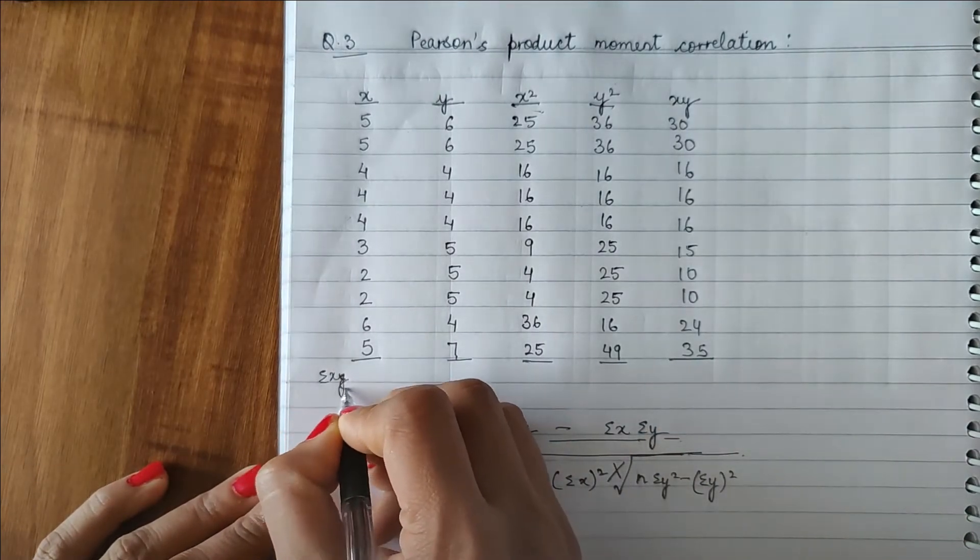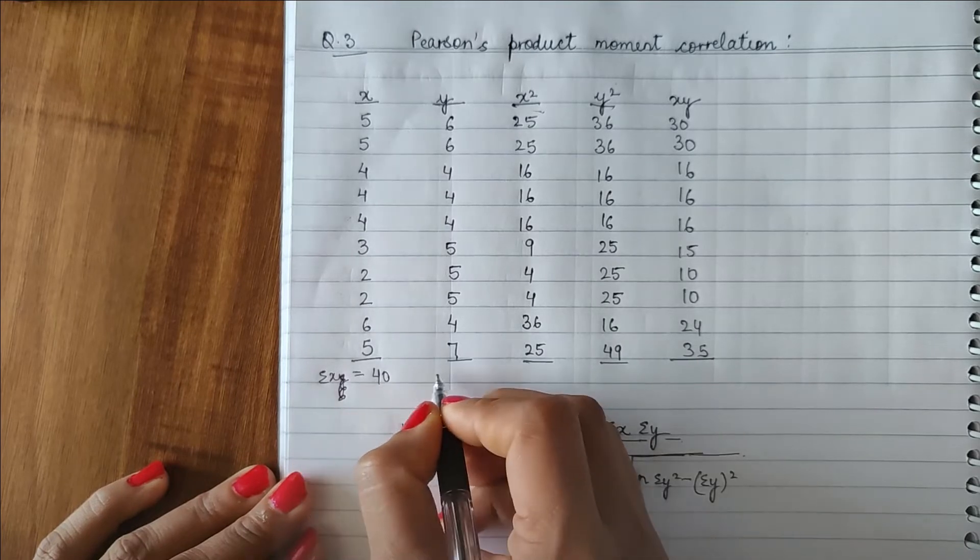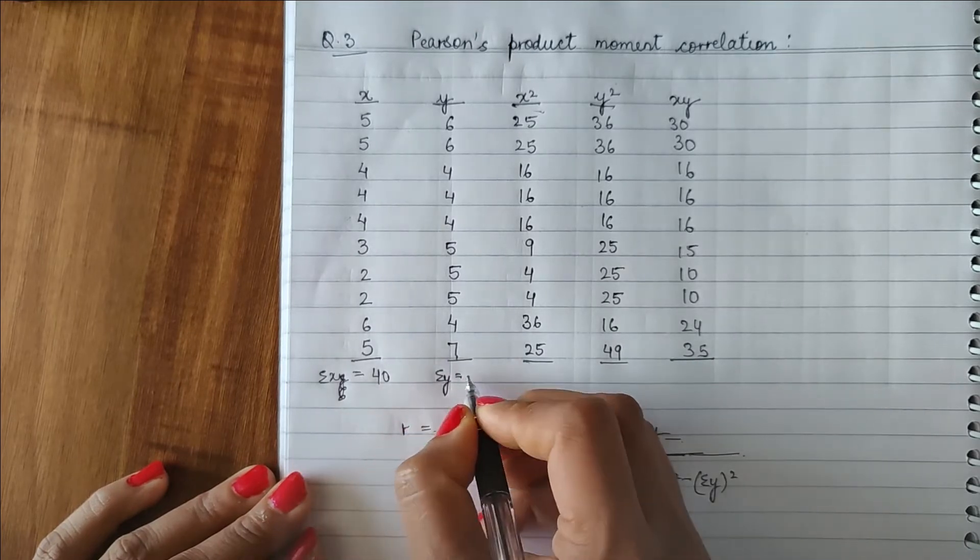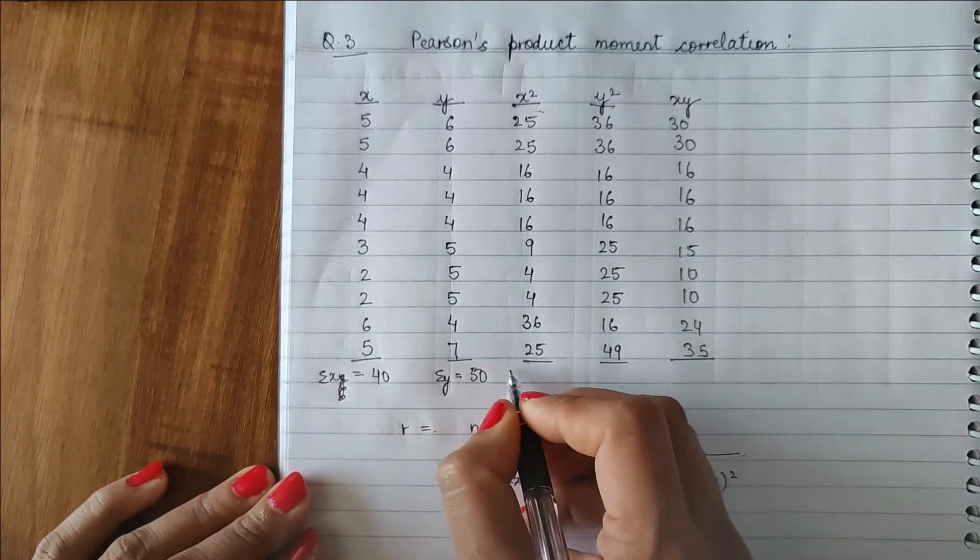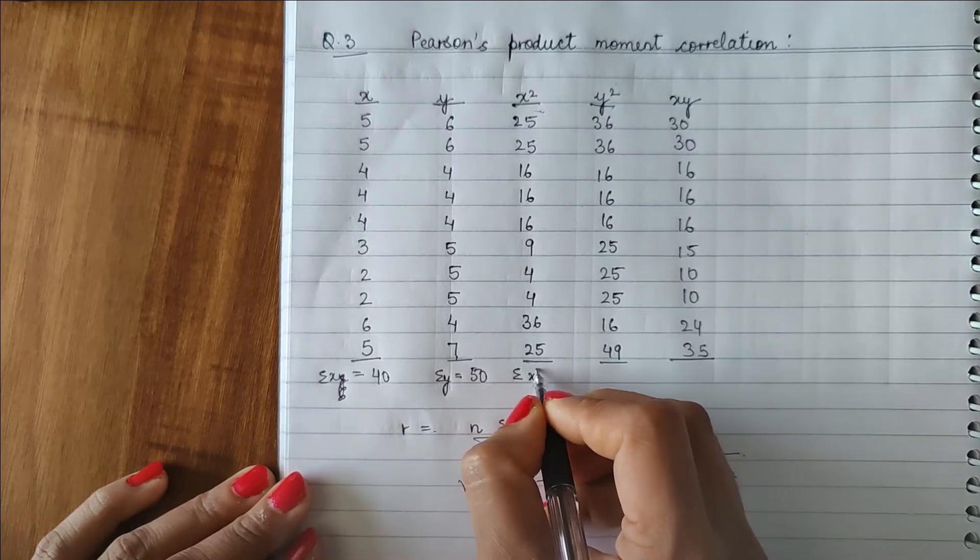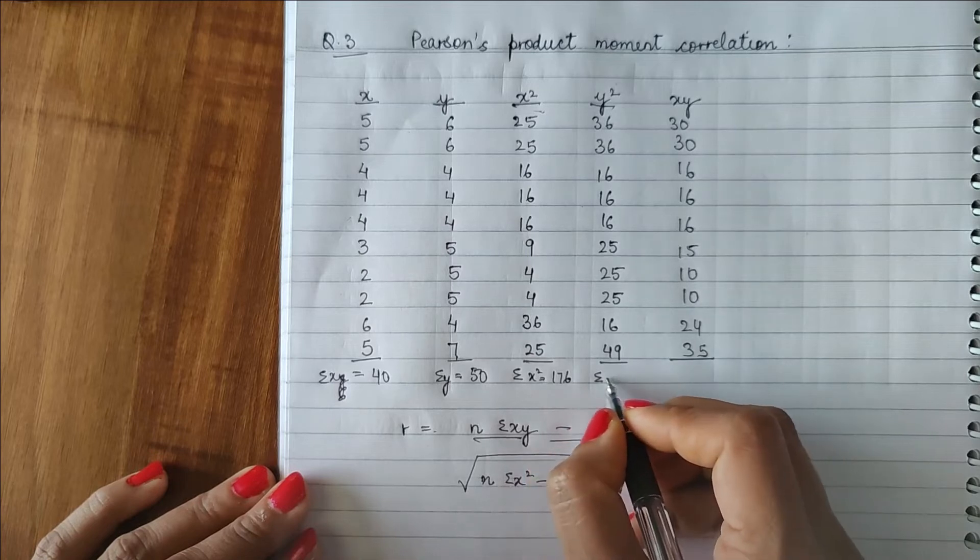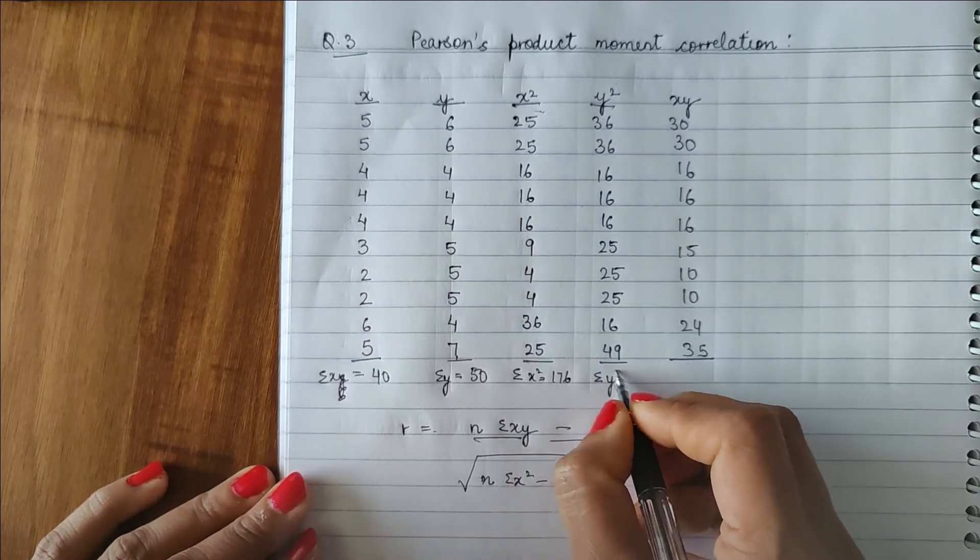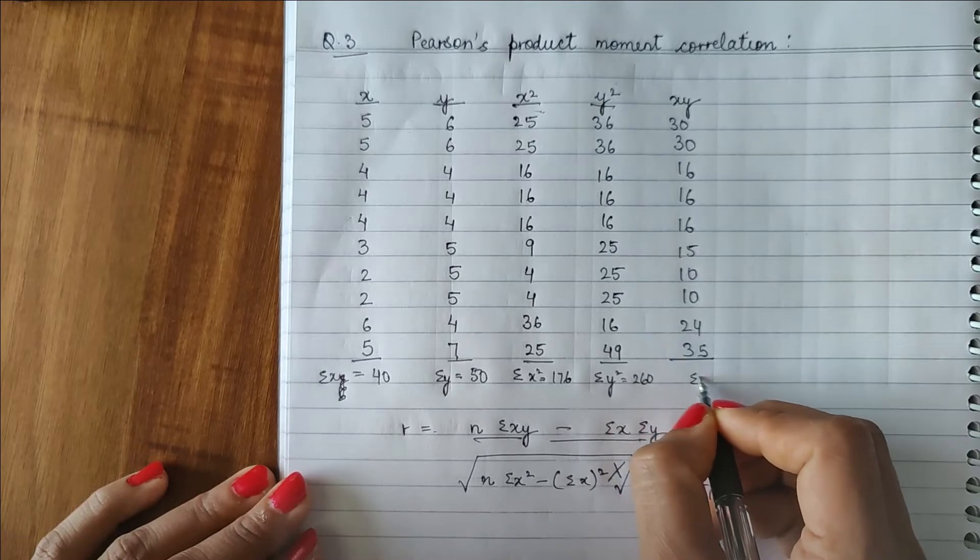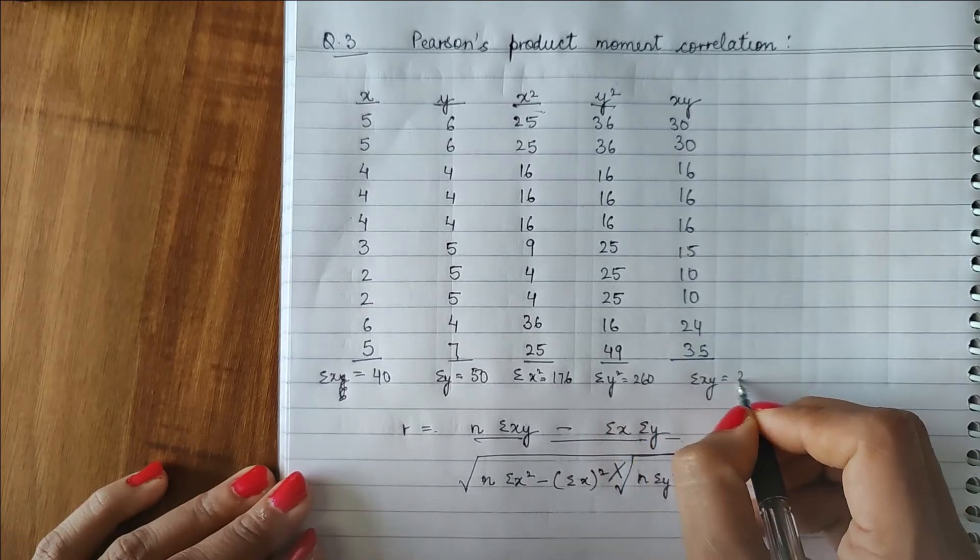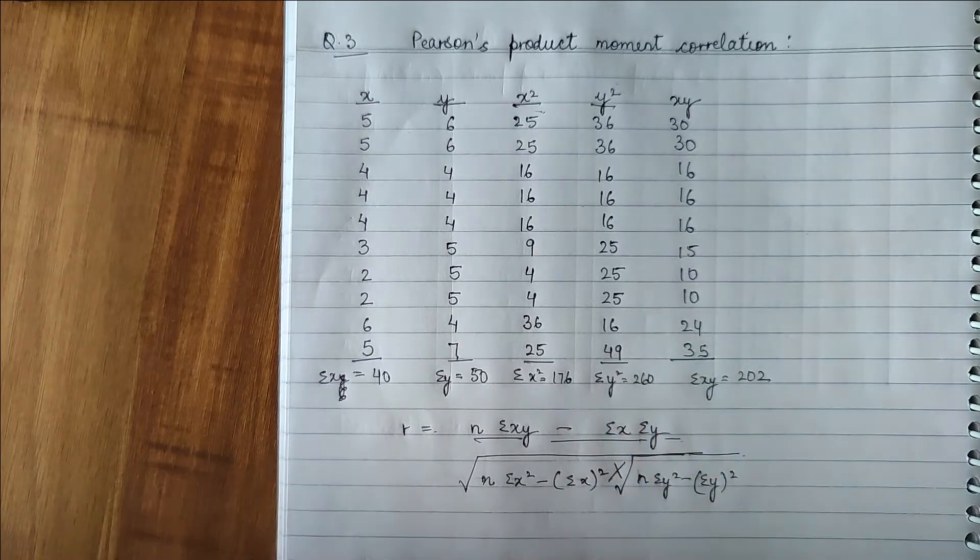Summation X is equal to 40. Summation Y is equal to 50. Summation X square is equal to 176. Summation of Y square is equal to 260. And summation XY is equal to 202. Alright.